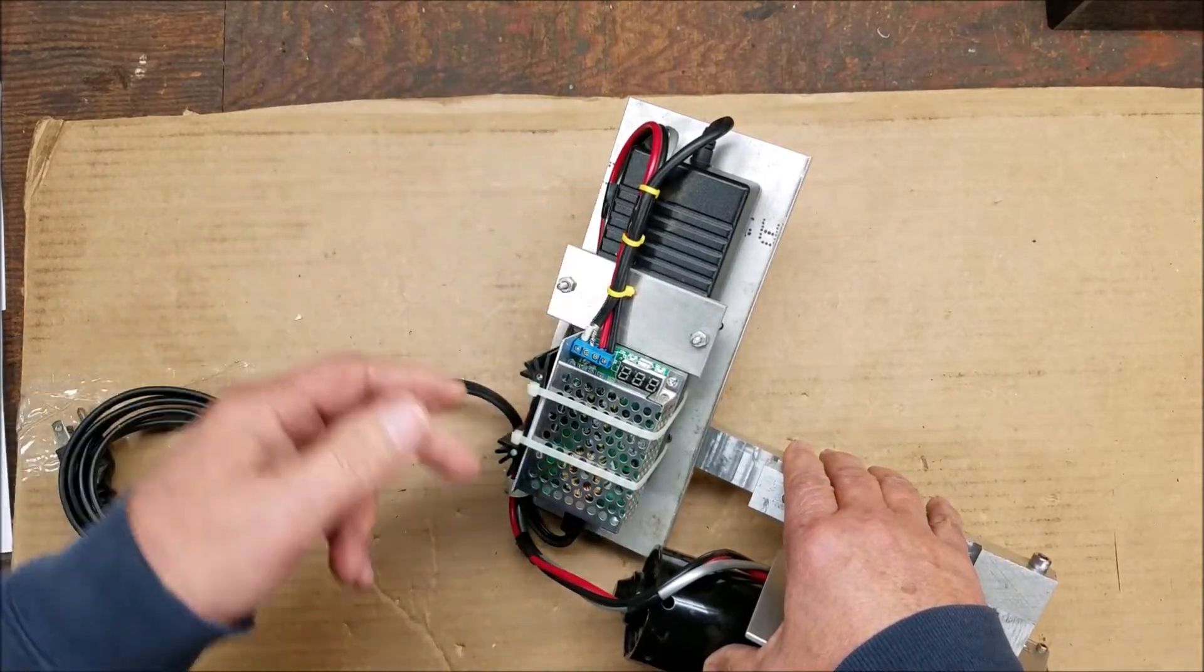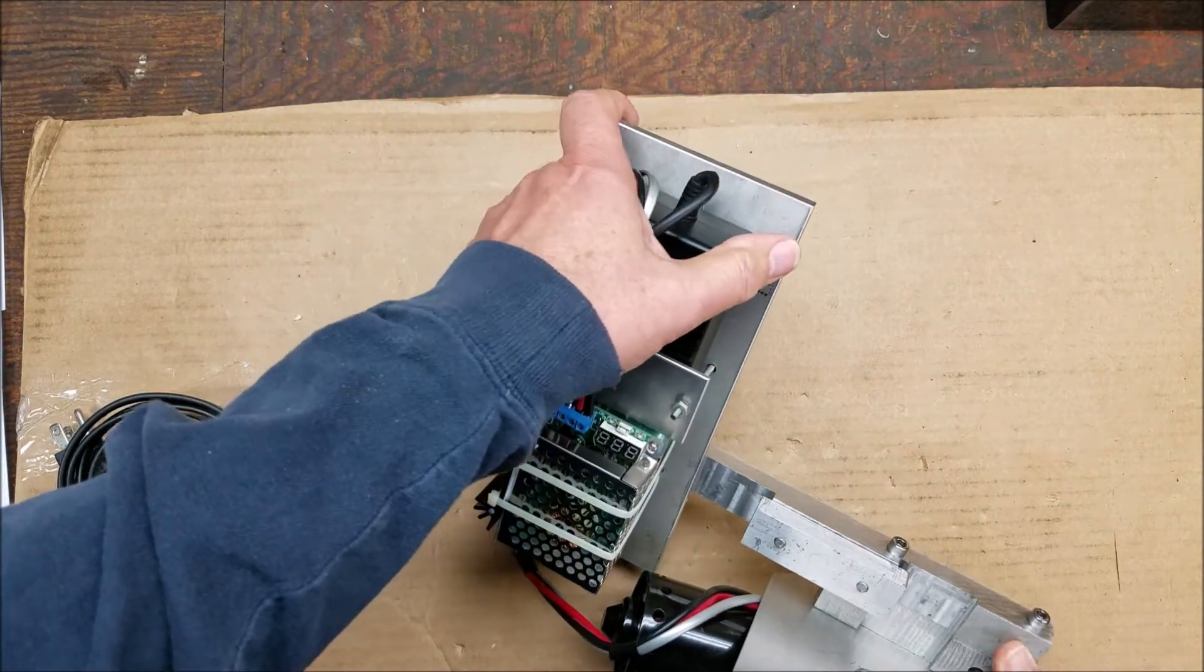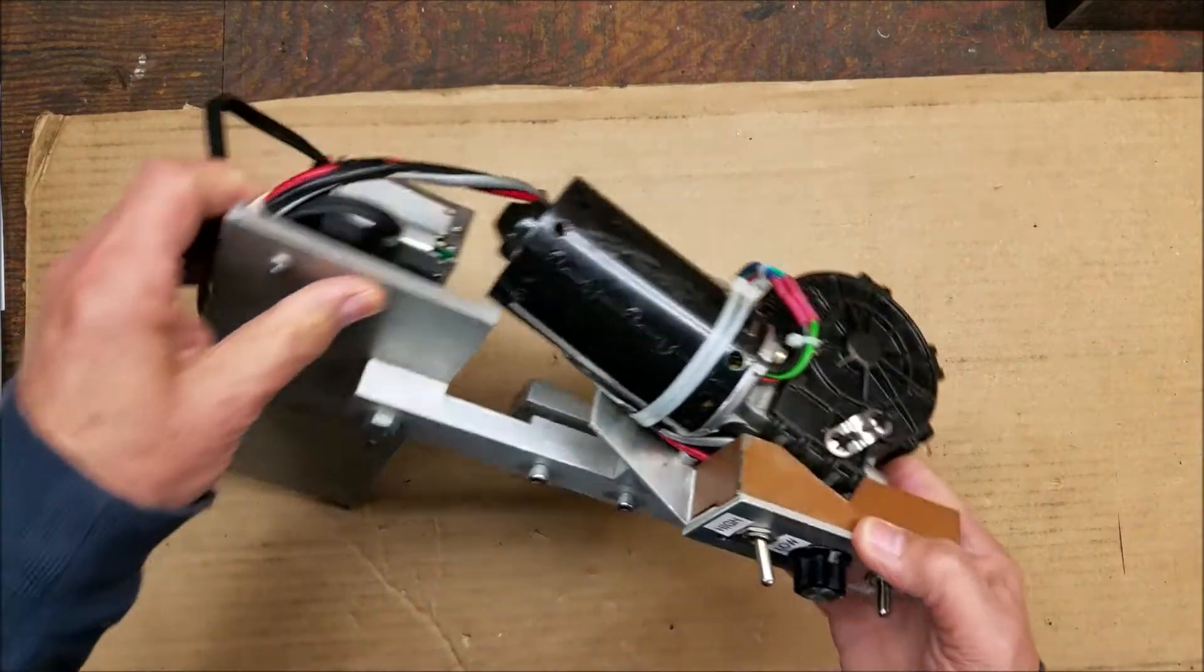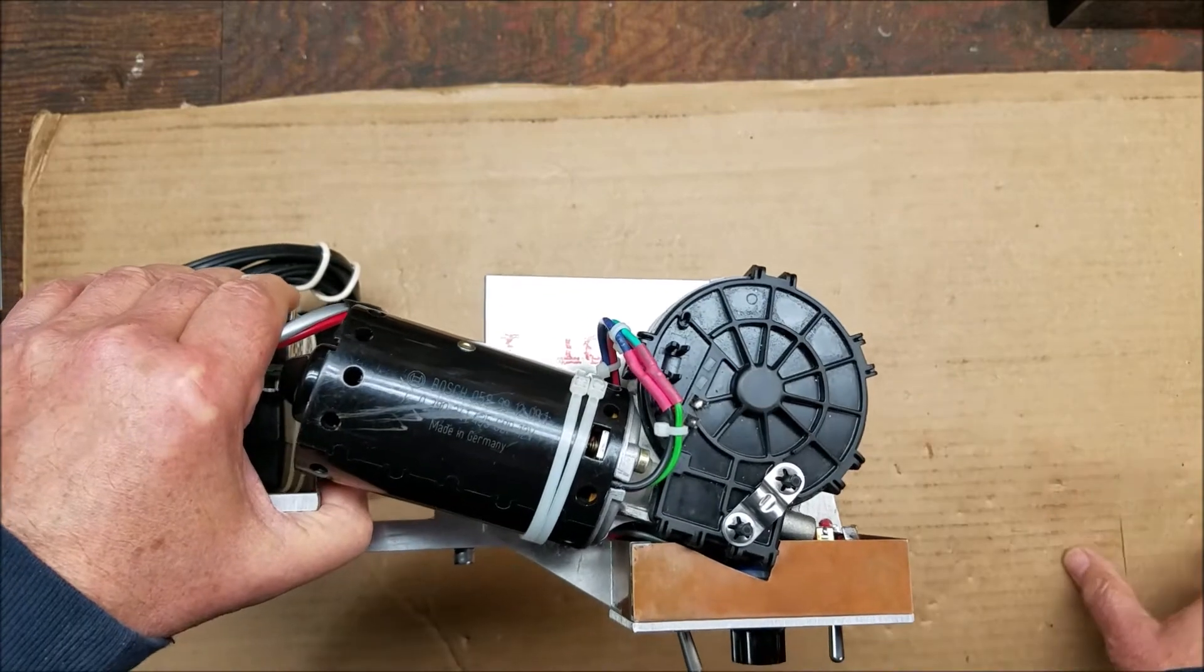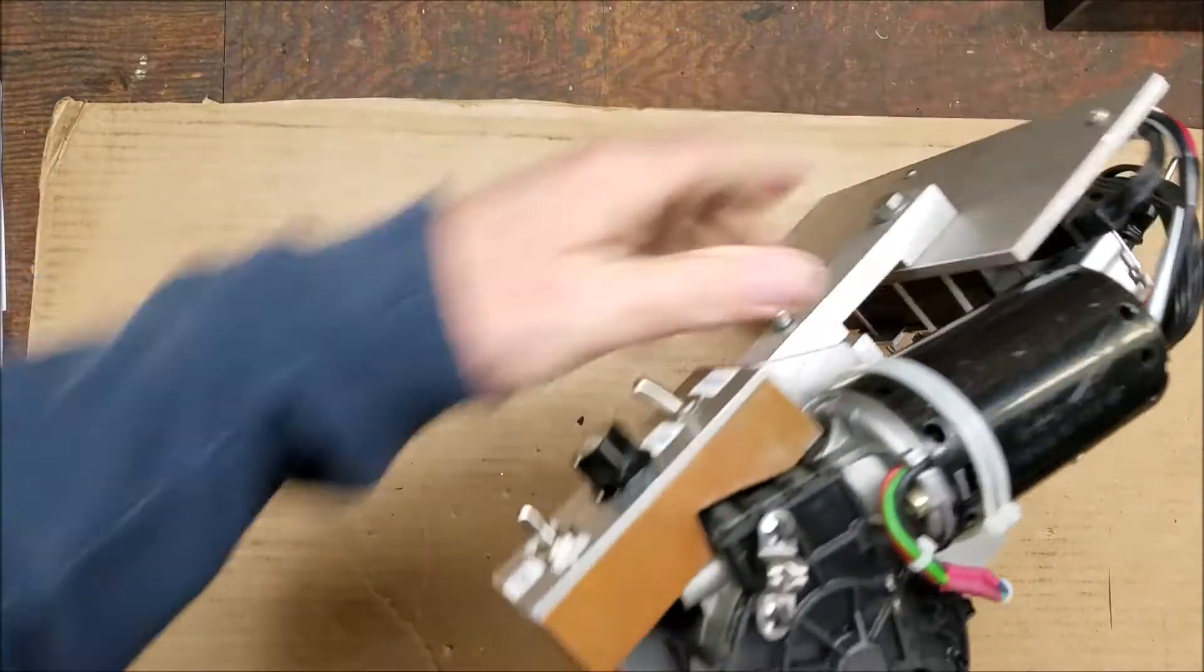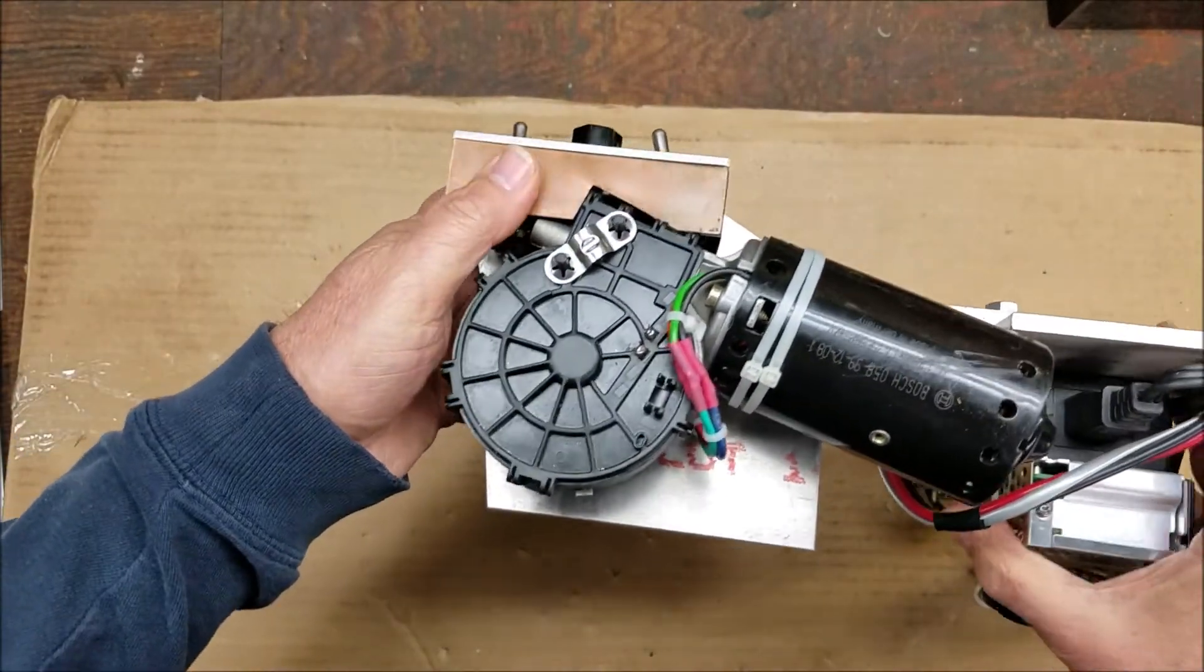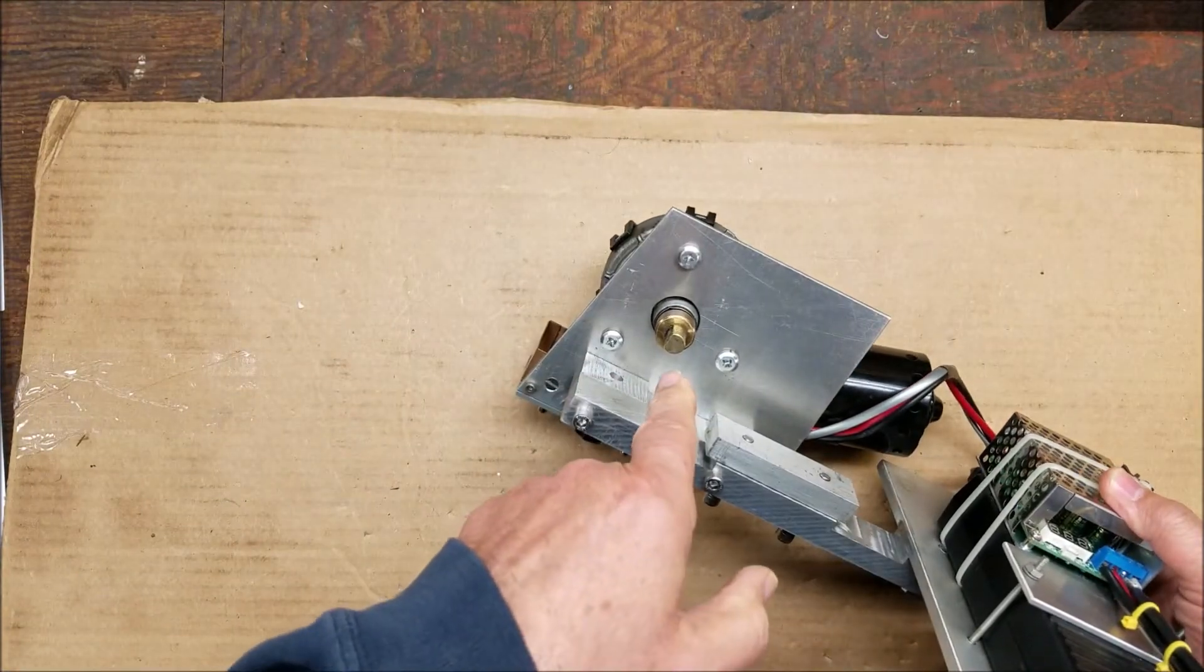All right, the drive unit is a windshield wiper motor from an old Mercedes Benz. I got it at a flea market. It's connected to this plate so that the end of the lead screw interfaces precisely with the end of this shaft.